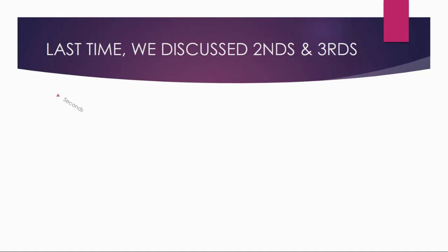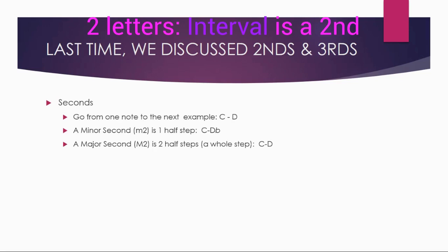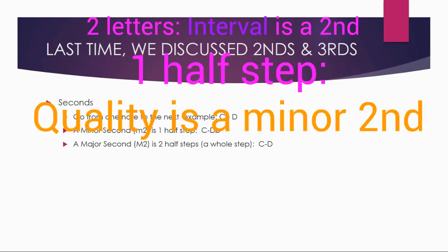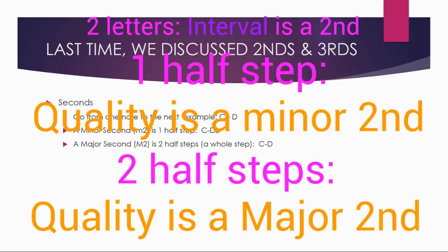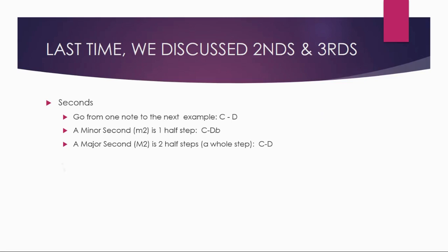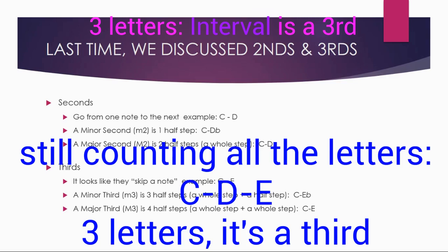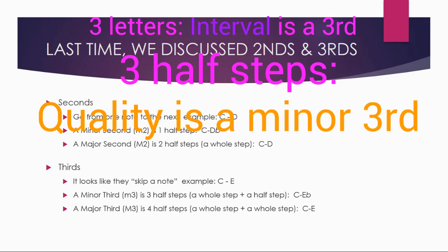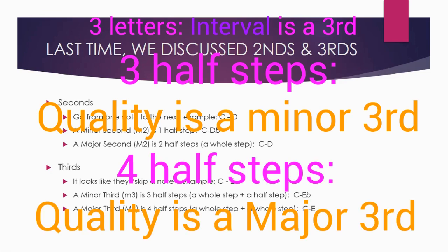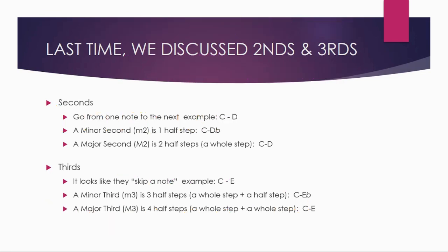Last time we discussed seconds and thirds. Seconds go from one note to the next — for example, C to D. A minor second is just one half step, like C to D flat. A major second is two half steps, also known as a whole step — C to D. Thirds look like they skip a note, for example C to E — it looks like we skipped D, but we still count it: C, D, E. Three notes are involved. A minor third is three half steps — C to E flat. A major third is four half steps, or two whole steps — C to E natural.